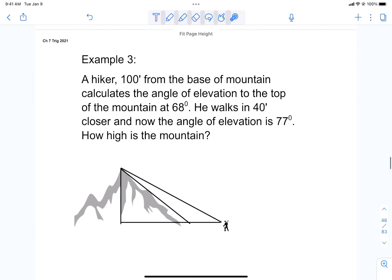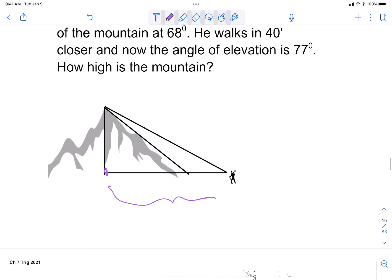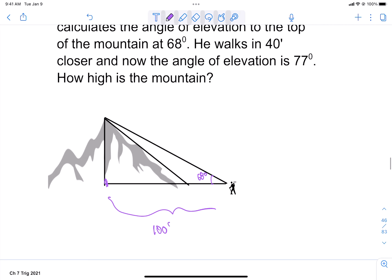Last one is kind of the most intricate of all. It says a hiker is 100 feet from the base of the mountain. And we're going to assume this is the base of the mountain. And calculates the angle of elevation to the top of the mountain is 68 degrees. So he's 100 feet away. And this angle is 68 degrees. Now, he walks in 40 feet. If he walks in 40 feet, this is 40. So this would be 60. And the closer angle of elevation now is 77.